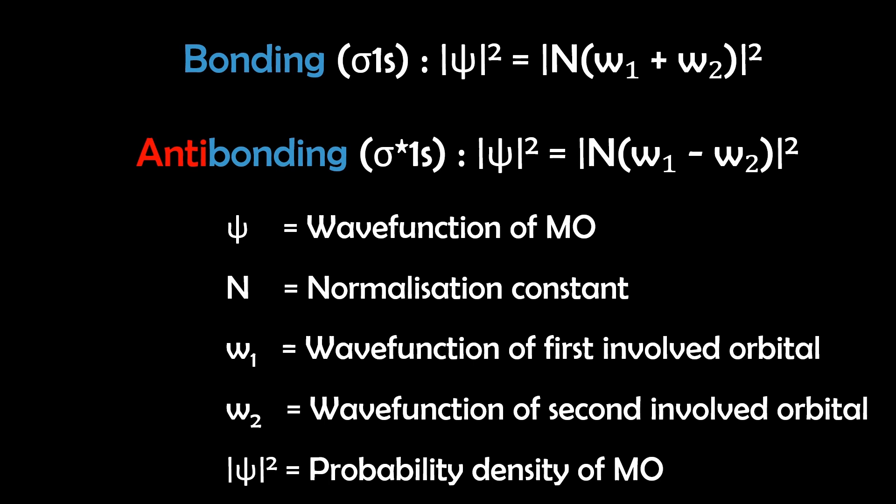Mathematically, we write these orbitals as combinations of atomic wave functions. The probability density of the bonding orbital is given as the absolute value of ψ squared equals the absolute value of n times ψ1 plus ψ2 squared. And for anti-bonding, we have the absolute value of ψ squared equals the absolute value of n times ψ1 minus ψ2 squared. And here ψ1 and ψ2 are the atomic wave functions for the 1s orbitals, and n is the normalization constant that ensures the probability is conserved.